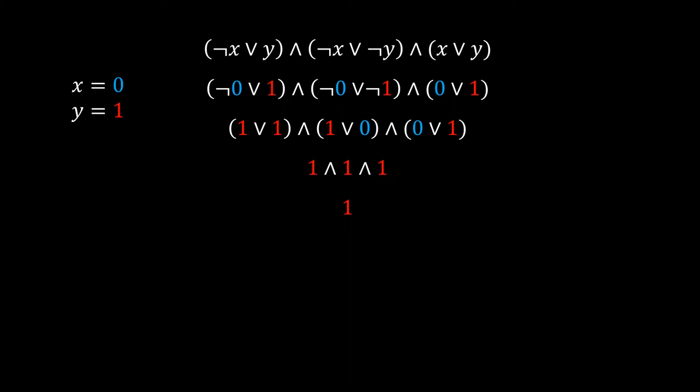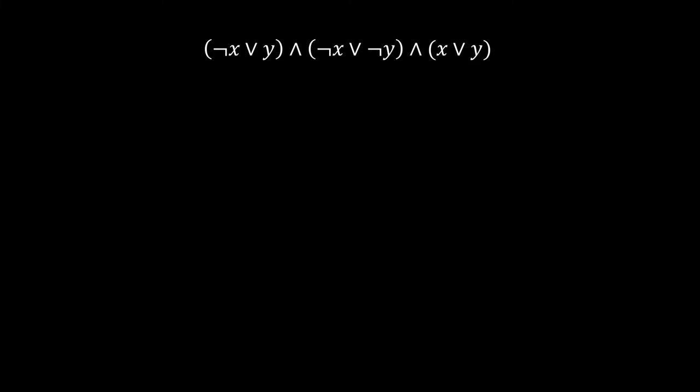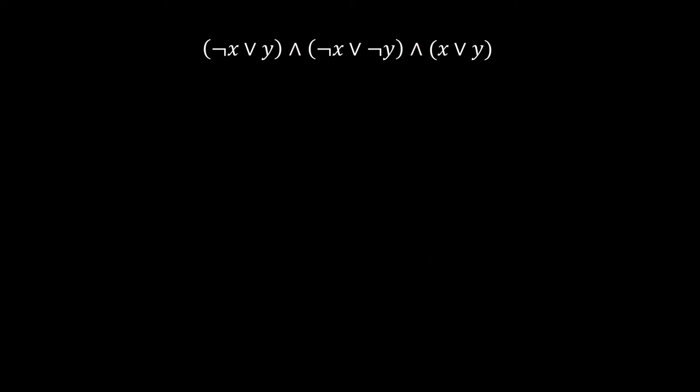Let's first consider some classes of formulas that are maybe easier to solve. The formula that we just looked at is of a special kind. Note that it is a big conjunction of individual brackets. Each bracket is known as a clause. Clauses are big disjunctions of individual variables or their negations. Variables and their negations are called literals. To distinguish between the two cases, variables appearing negated are called negative literals, while variables appearing non-negated are called positive literals. A formula like the one we just analyzed is said to be in conjunctive normal form, or CNF for short.